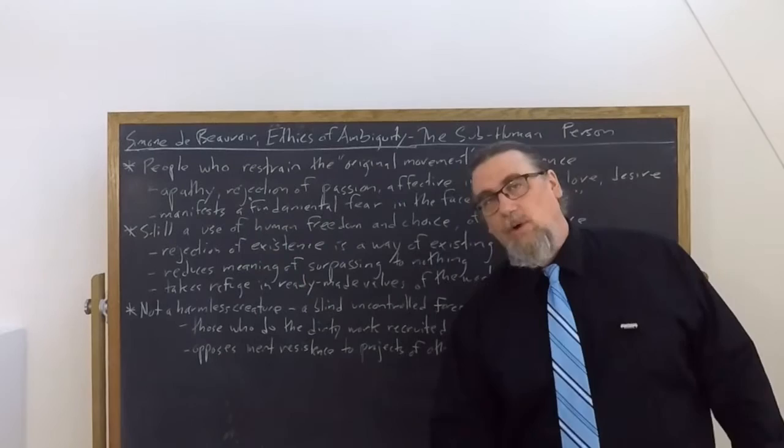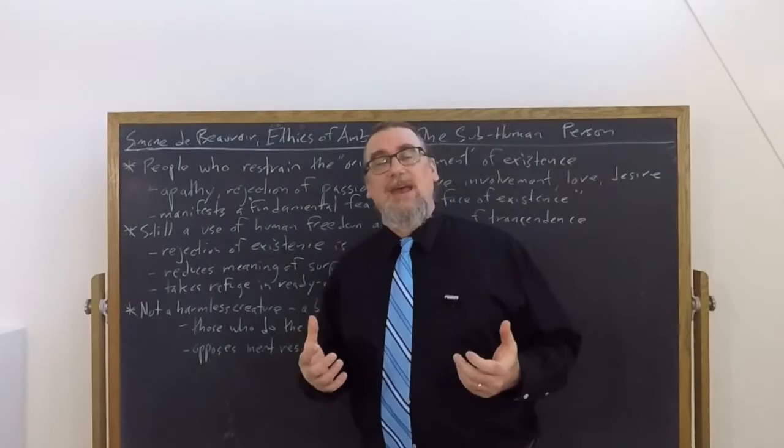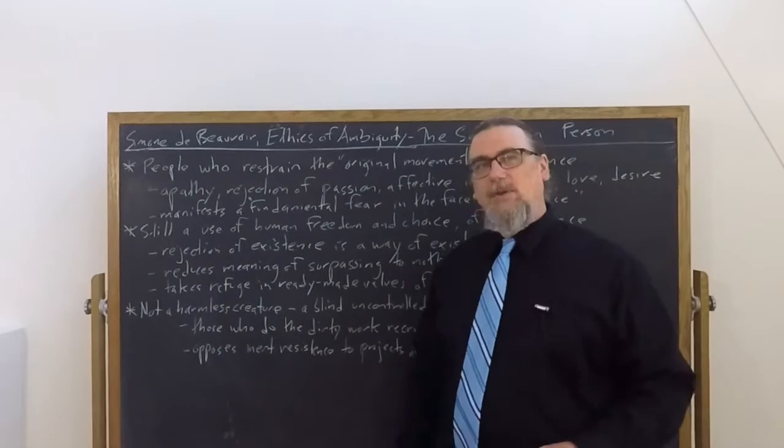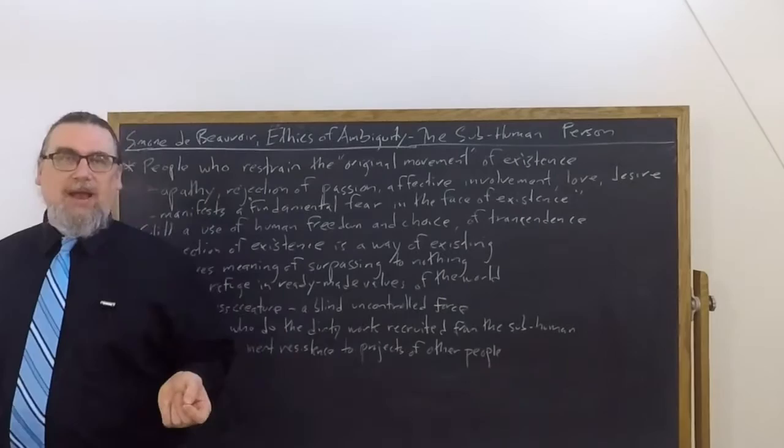And she talks about that as those who restrain the original movement of existence. What does that mean? Well, as she's said earlier, to exist is to make oneself a lack of being. It is to cast oneself into the world. If you're only reading this section, you might say, what does that mean? To exist for a human being is this: there's two sides. It is to be cast into the world. This is a standard existentialist way of looking at things. We are in the world before we choose to be in the world. We are in situations.